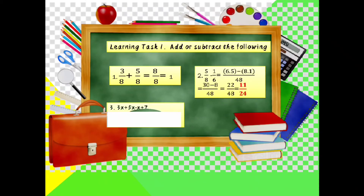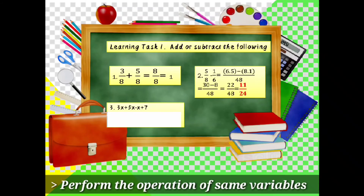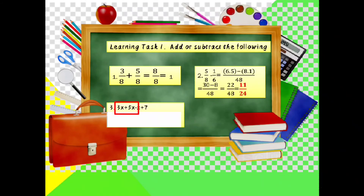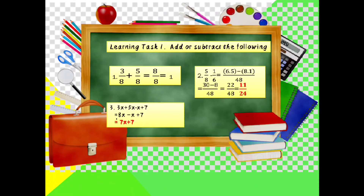Example number 3: 3x plus 5x minus x plus 7. Perform the operations on terms with the same variable. So, 3x plus 5x is 8x, minus x equals 7x, then copy positive 7. The final answer is 7x plus 7.